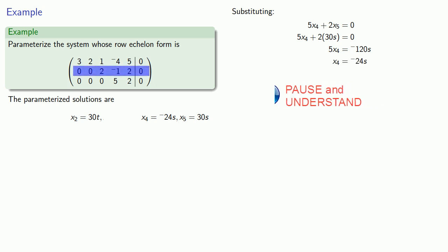The next to last row tells me 2x3 minus x4 plus 2x5 equals 0. So I'll substitute in my values for x4 and x5 and get a value for x3.